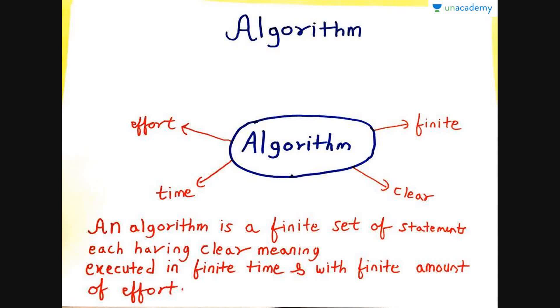Let us move on to algorithm. Algorithm is a finite set of statements each having clear precise meaning which can be executed in finite time and within finite amount of effort. Now, see the diagram as shown. Algorithm. Now, go towards the right and go in a clockwise direction. Algorithm, finite, clear, time and effort. From this diagram, you can make the full definition as shown. So it's easier to make the notes like this with the help of diagrams.